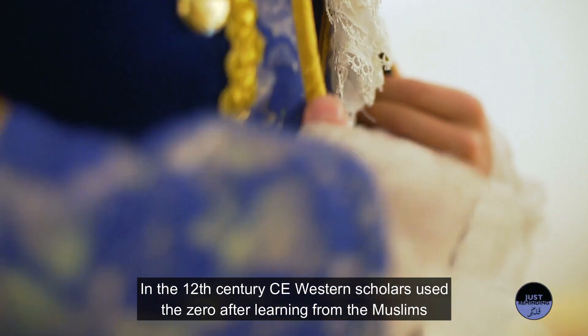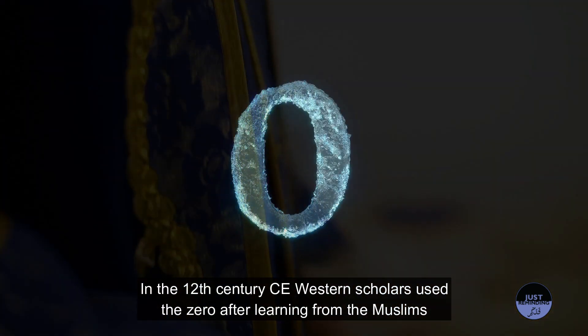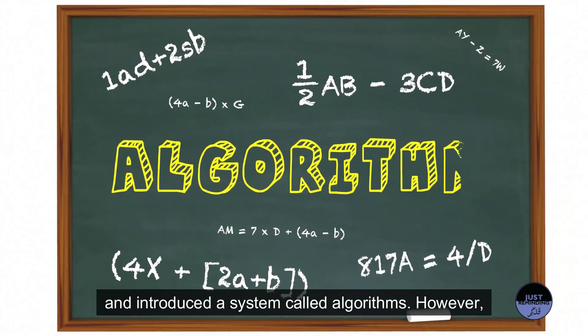In the 12th century CE, Western scholars used the zero after learning from the Muslims and introduced a system called algorithms. However,